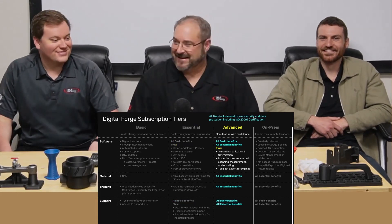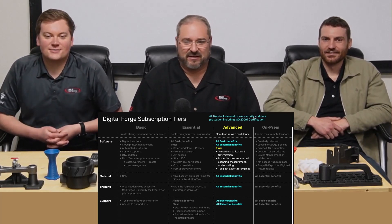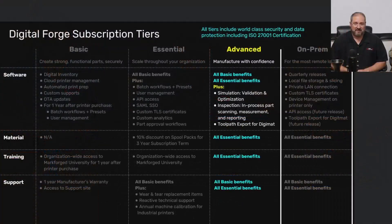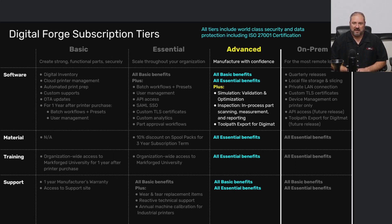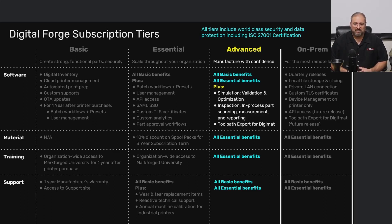Let's talk about the Advanced tier. The Advanced tier covers everything from Basic and Essential, but the biggest value it adds is simulation. Simulation is an extremely valuable, powerful piece of software that adds validation and optimization for your parts. It also adds inspection through Blacksmith — your in-process part inspection and scanning capability. Material and training benefits include everything from Essential, and support includes all Basic and Essential benefits.